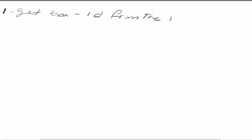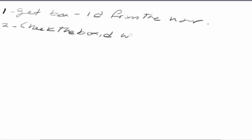The very first thing is we have to get the box ID from the user. The second step is, after we get this value, we have to check the box ID against the values we have — one, two, three, and four. These are the four boxes we have.